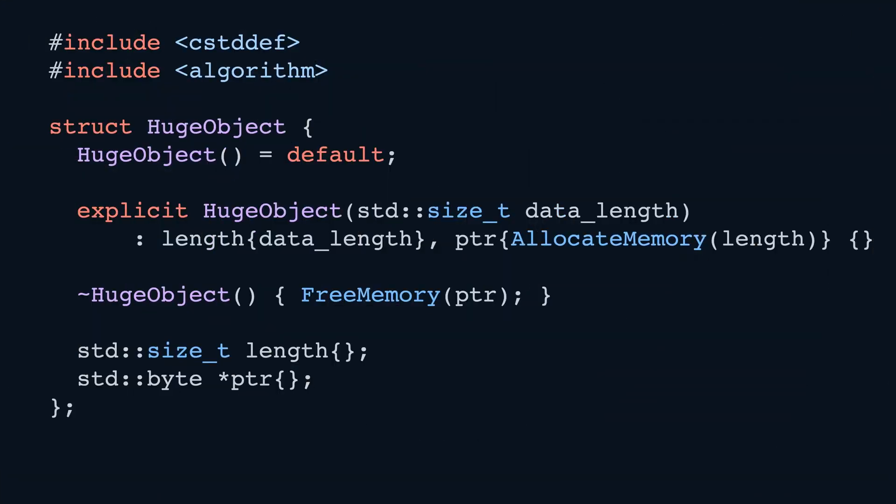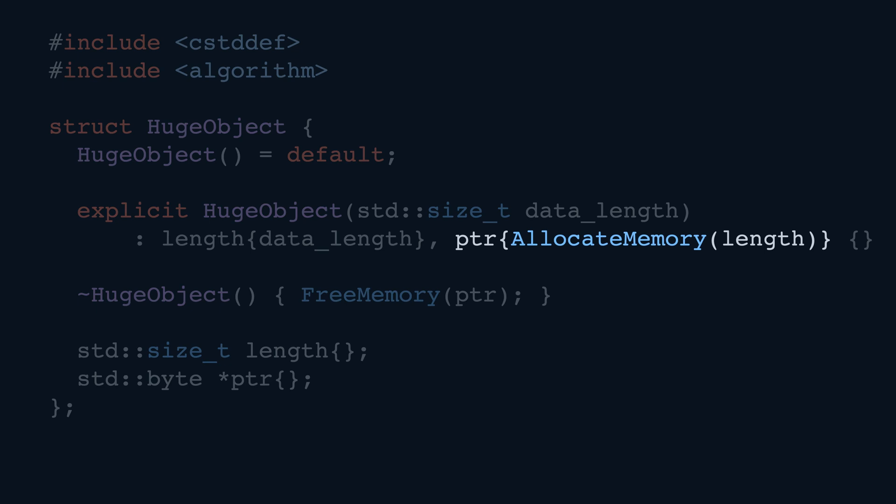In the spirit of starting with why, I want us to start with an example that will illustrate why we need value semantics in the first place. But first we need to set the stage. Imagine that we have a custom type, a huge object, that owns some big chunk of memory. It allocates this memory using some magic function, allocateMemory, on creation, and frees this memory using another magic function, freeMemory, when it dies. Please see the lecture on object lifecycle if this part sounds confusing.